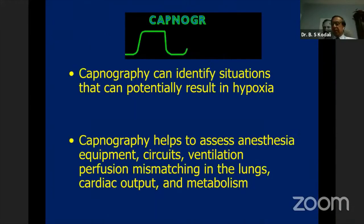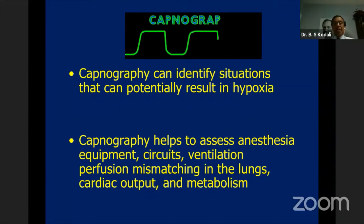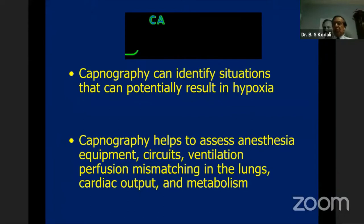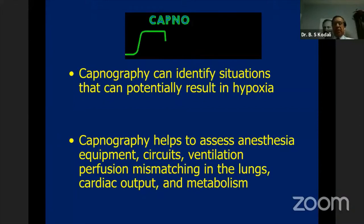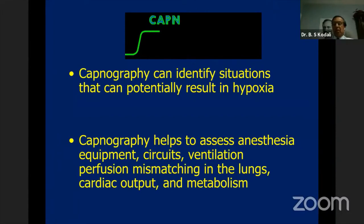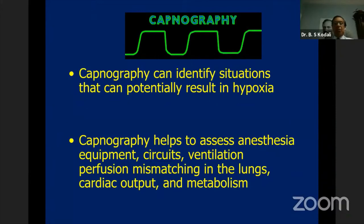This is where capnography comes into picture. Capnography can potentially help to identify situations that result in hypoxia, giving you clues to figure out what is wrong with the patient so you can take preventive actions within the three minutes before hypoxia produces irreversible damage. It also helps to prevent hypoxia by forewarning about clinical situations that could potentially result in hypoxia if you do not take corrective measures.